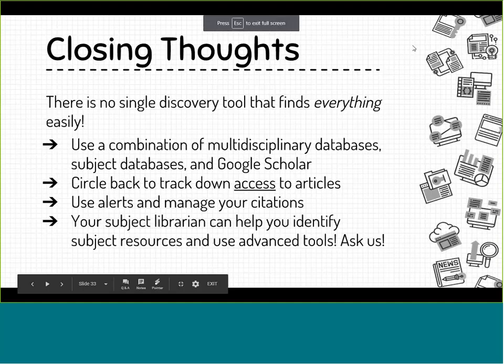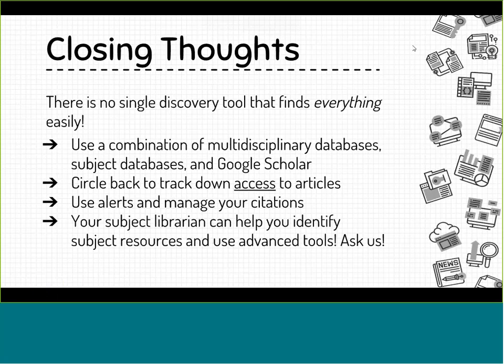Some closing thoughts: there's no single discovery tool that finds everything, because we don't have access to every article ever written. Our databases don't index everything, and Google Scholar doesn't index everything either. So a good research practice is to use a combination of multidisciplinary databases, subject databases, and Google Scholar. You always want to circle back to track down access to articles — you might find a citation and need to go through multiple sources to figure out what gives you full-text access. You can use alerts and manage your citations through our databases, through Google Scholar, or through open access tools like Zotero. And your subject librarian is the person who can help you identify the best subject resources and use these advanced tools.